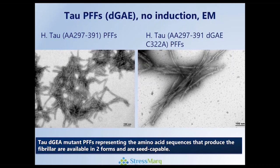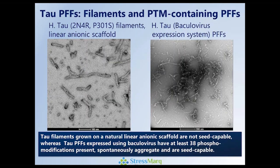If there was interest in trying to disrupt the very core aspects of fibril formation, these DGAE constructs would be very useful tools. Taking it a step further and trying to get closer to paired helical filaments, on the left-hand side the full-length tau grown on a linear natural anionic scaffold shows a twisted helical formation becoming increasingly clear. Taking it even further by expressing these systems in baculovirus so that post-translational modifications are present — in this case over 38 phosphosites — these entities will spontaneously aggregate without any help and are also seeding capable.